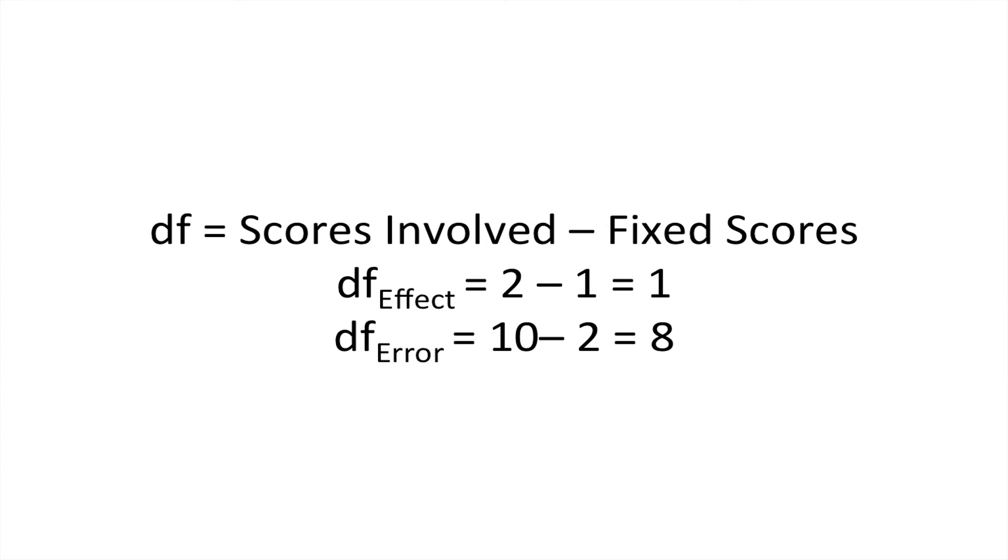Like any ANOVA, we need to calculate degrees of freedom, which is the number of scores involved minus the fixed scores. This is the idea of how many means do we need to compare to get the result we did. If you think about balls in a bag, for example, you have a choice which ball you're going to pull out of the bag until it gets to the last one.